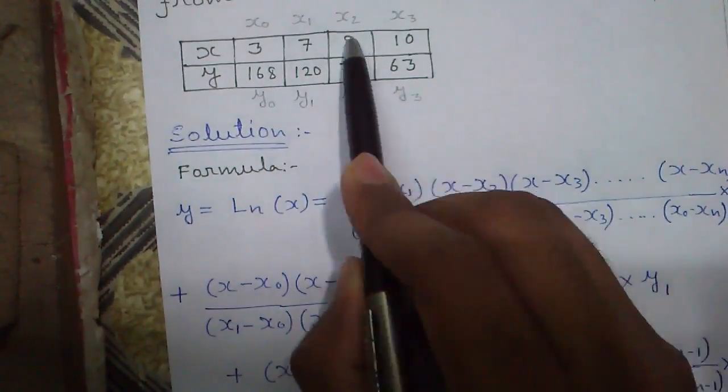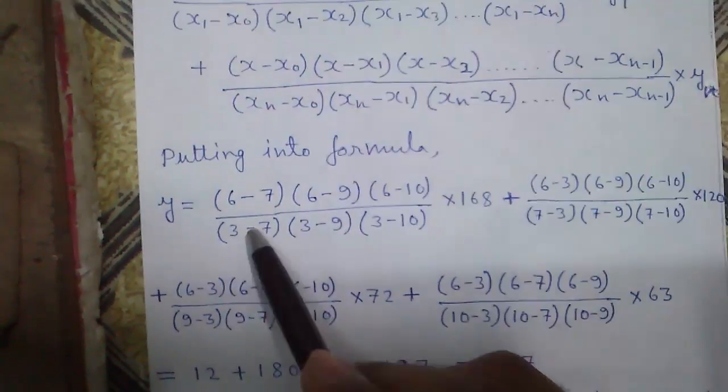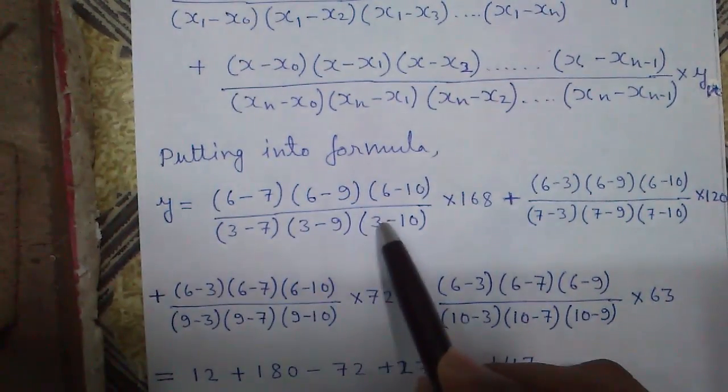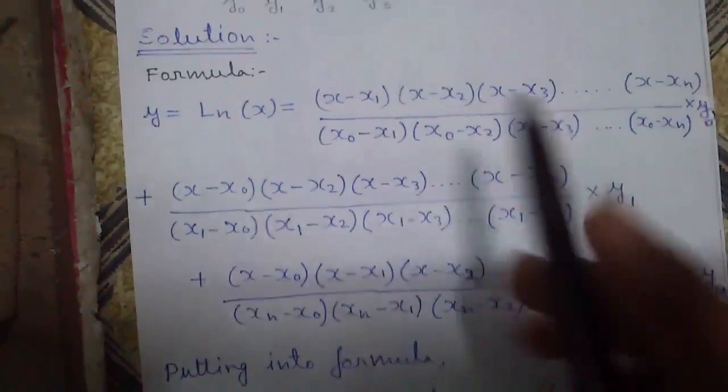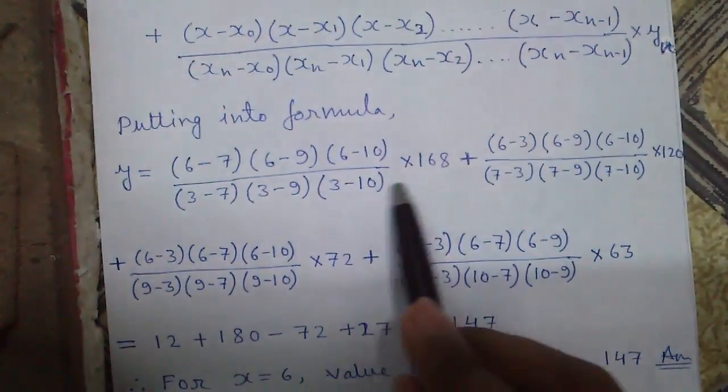x0 minus x1 that is 7, then x0 minus x2, then x0 minus x3. See 3 minus 7, 3 minus 9, and 3 minus 10 times y0 that is 168.